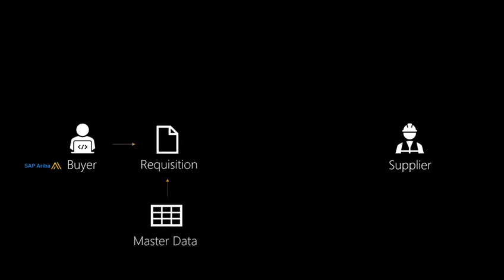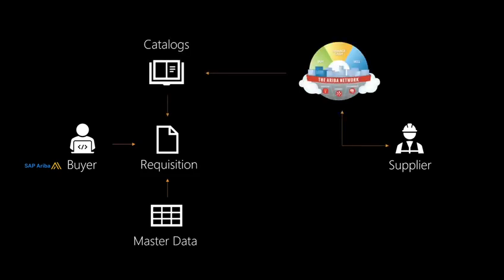For the buyer to start the process of buying goods and services, a purchase request must be filled in. This is called a requisition. In order to complete this requisition, other components of SAP Ariba come into play. For instance, master data is used to create a requisition. Transactional data is used to complete a purchase order. And catalogs are used to add goods or services to the requisition.